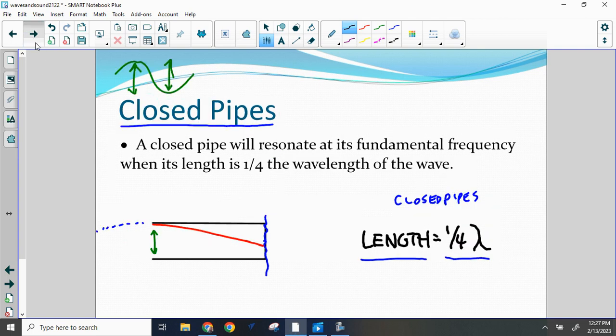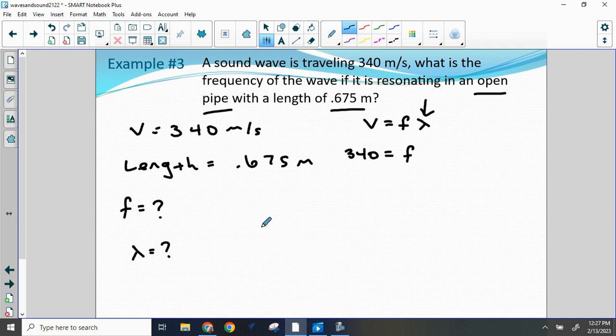And so since we have an open pipe, we're going to say that the length of the pipe is equal to one-half times the wavelength. And the length of the pipe is 0.675 meters. So that's equal to one-half wavelength.